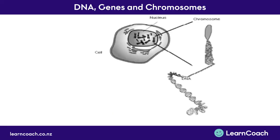DNA is in all of our cells, and it needs to be coiled up incredibly tightly so that it actually fits. Each strand of DNA is almost a meter long, and in fact, if you took all the DNA in your body and joined it up end to end, it would reach to the moon. So it needs to be coiled tightly. We as humans have 46 of these strands inside every single one of our cells.